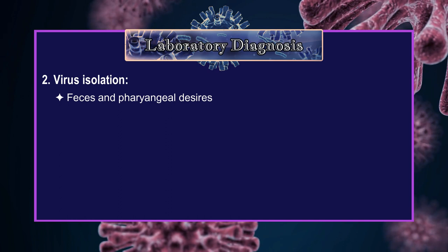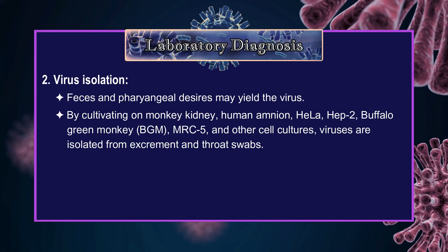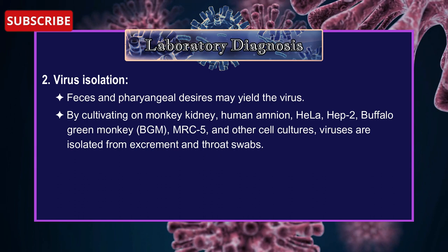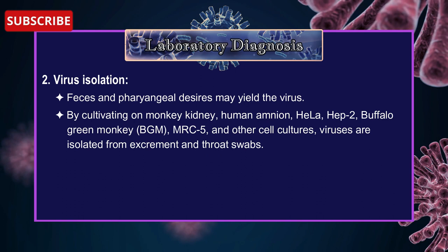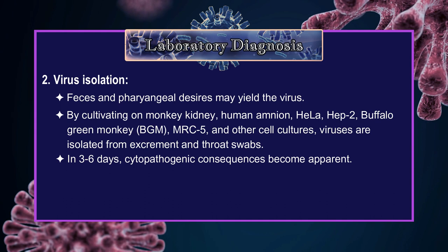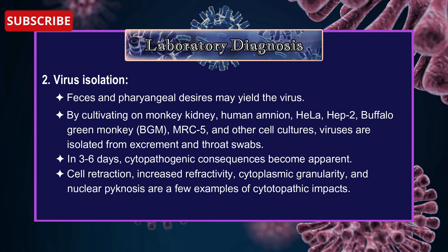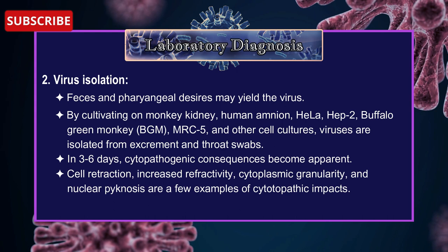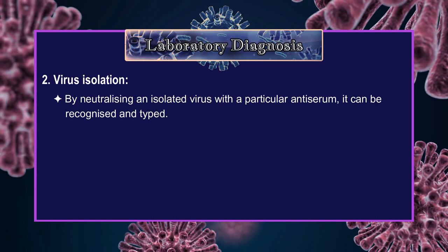2. Virus Isolation: Feces and throat swab samples may yield the virus. By cultivating on monkey kidney, human amnion, HeLa, Hep2, buffalo green monkey, BGM5, and other cell cultures, viruses are isolated from excrement and throat swabs. In 3-6 days, cytopathogenic effects become apparent. Cell retraction, increased refractivity, cytoplasmic granularity, and nuclear changes are a few examples of cytopathic effects. By neutralizing an isolated virus with a particular antiserum, it can be recognized and typed.